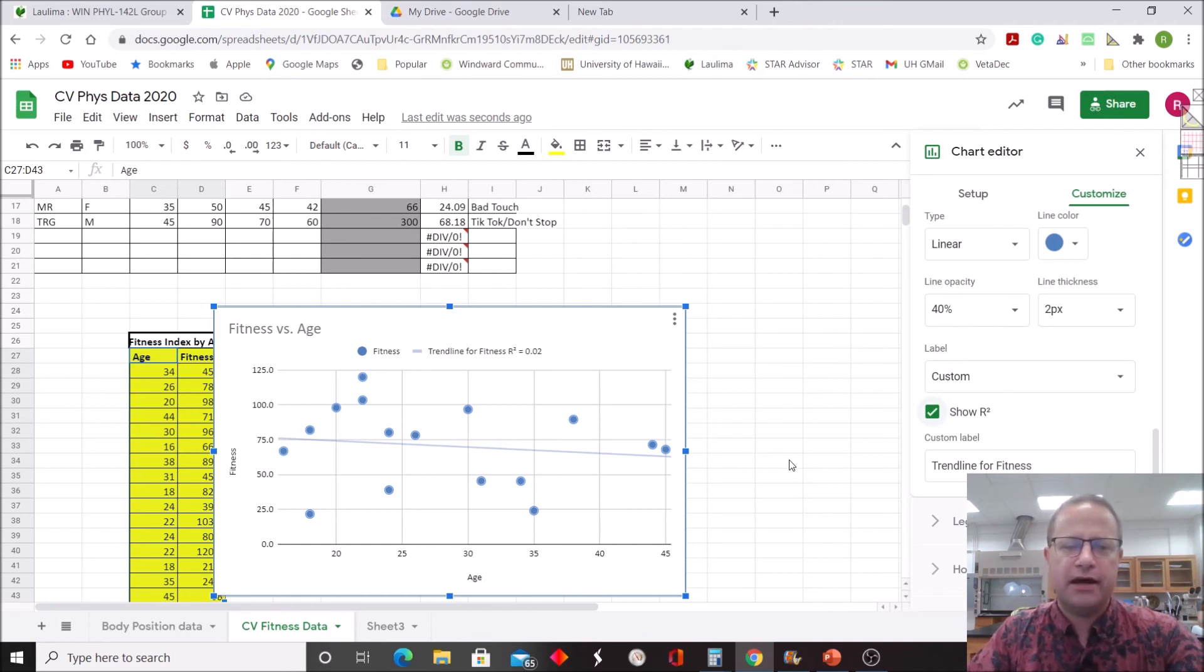but this relationship would not be significant, but it would be a weakly negative trend there. But don't be surprised if you run the data for your class that you might get a very strong relationship, a possibly significant relationship. And that's because the outcome of this experiment depends on the number of people included in the experiment as well as the age range.